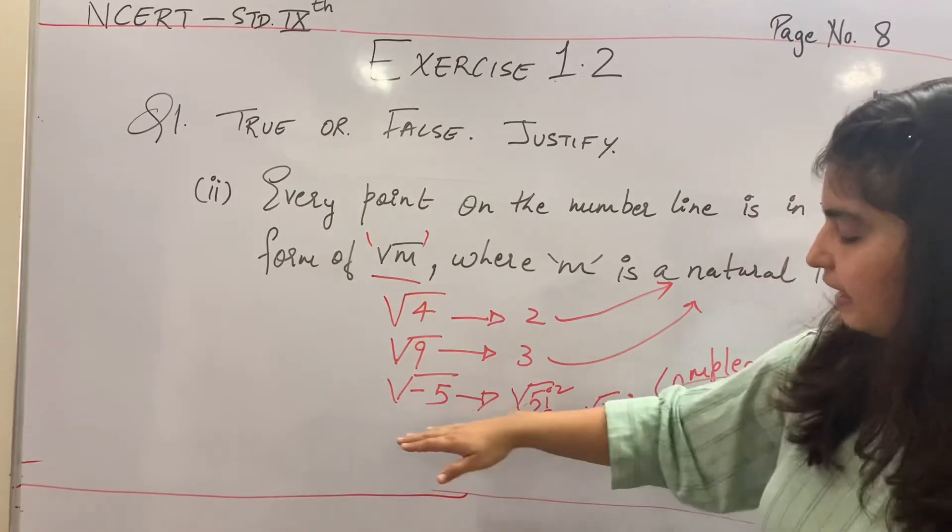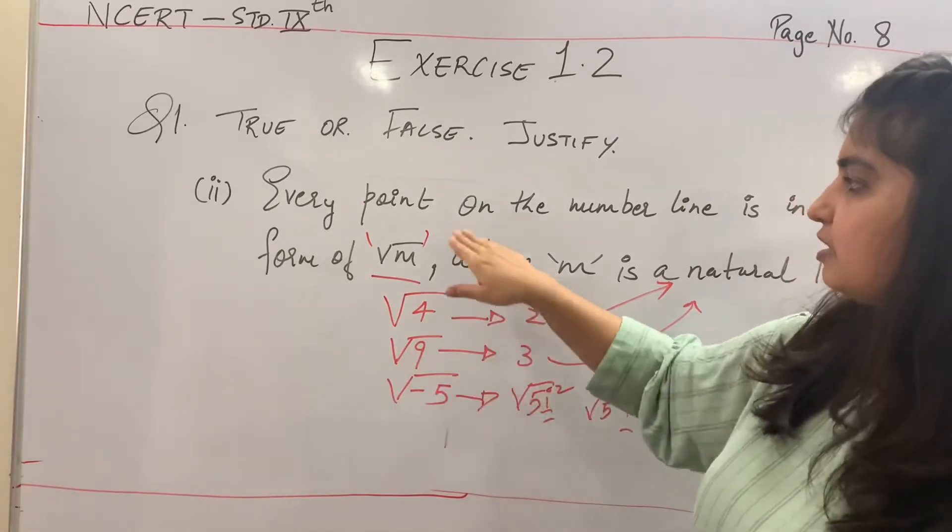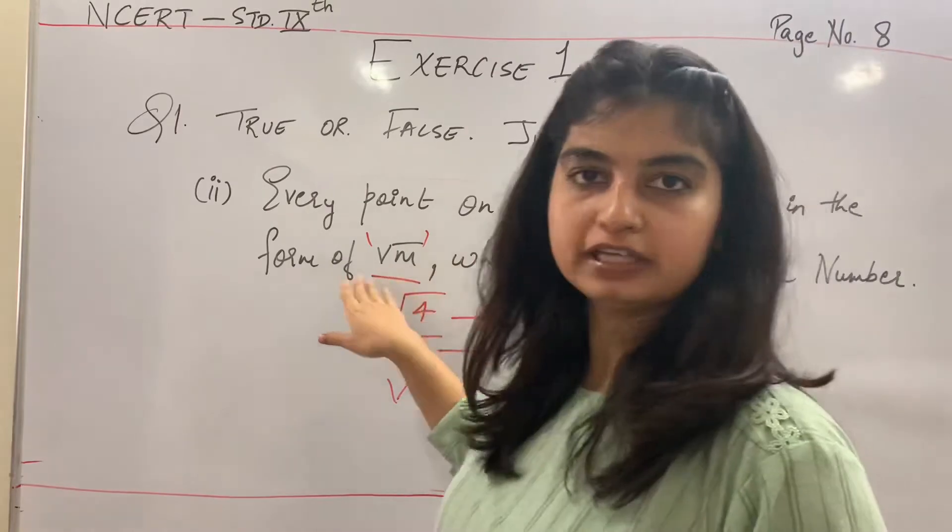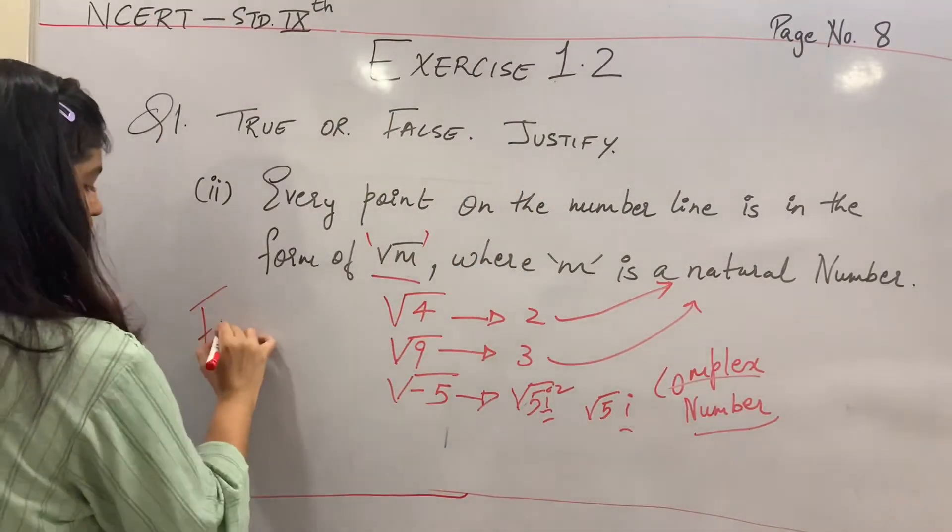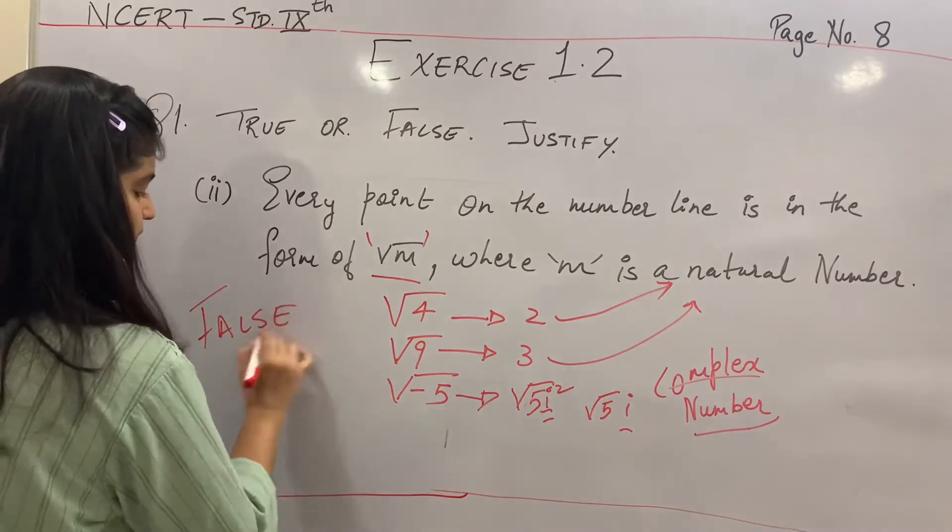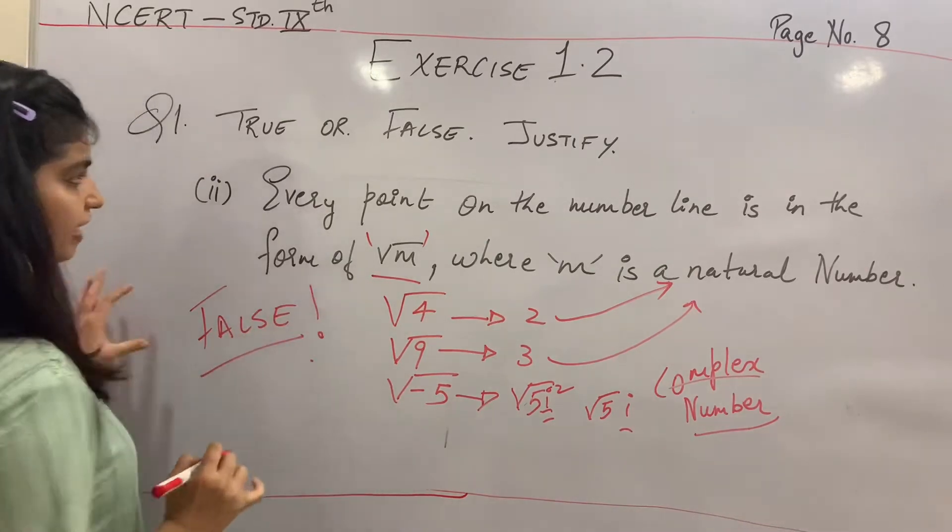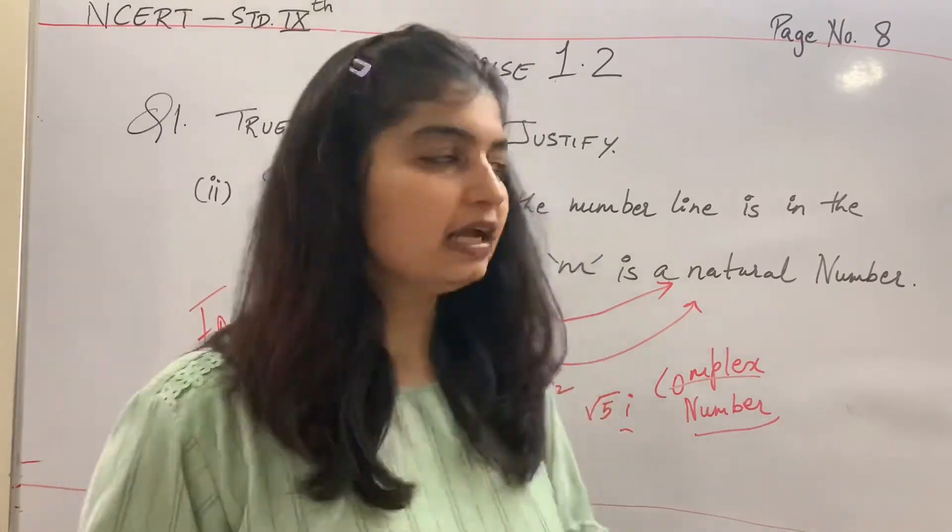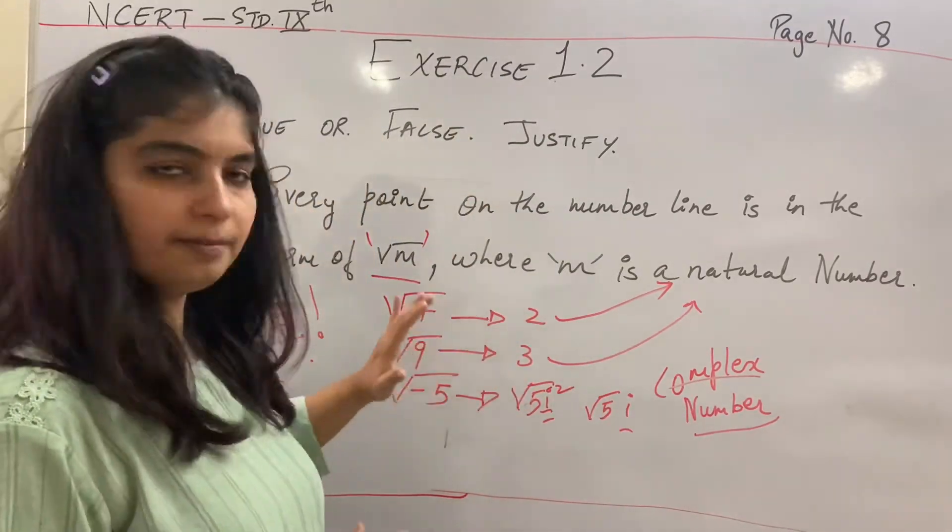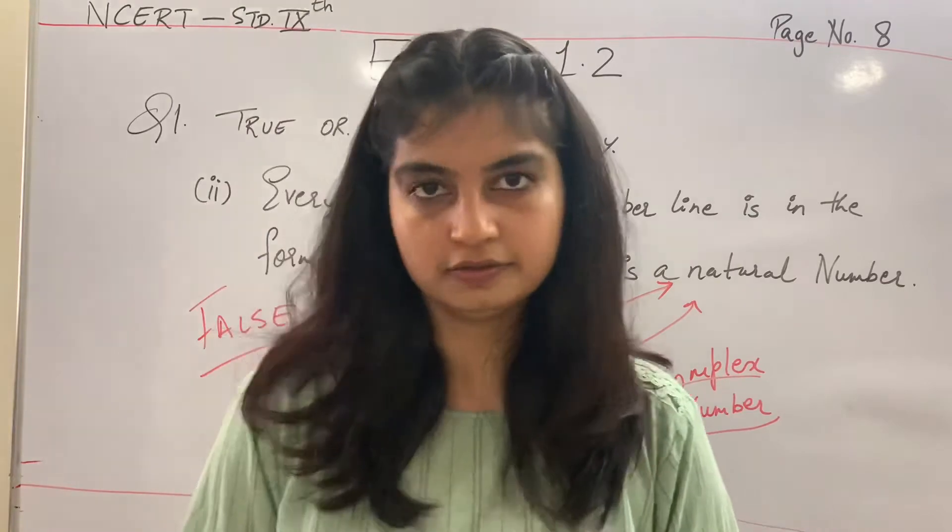This is a complex number jiske baare mein aap detail mein higher standards mein padhoge. Of course the name suggests, being complex thoda difficult hota hai in comparison to other numbers. So there is a variety of number which can't be expressed from number line with the form of root M. So this particular statement goes false. Always justify your statement of true and false giving an example.